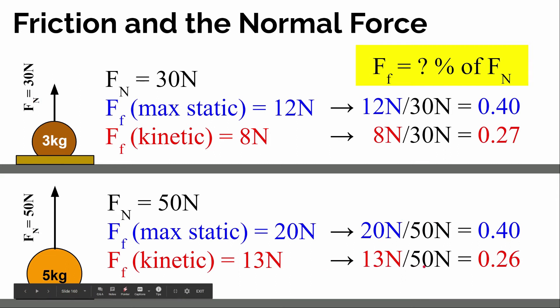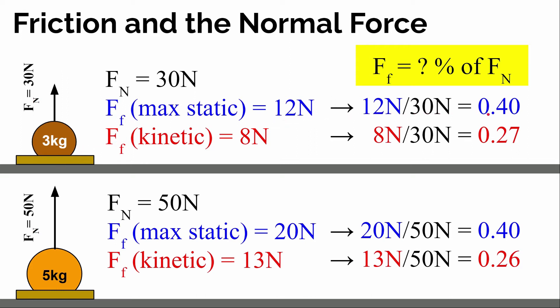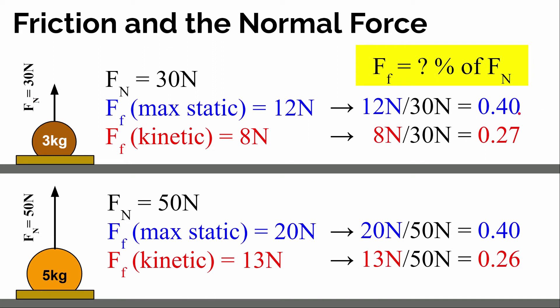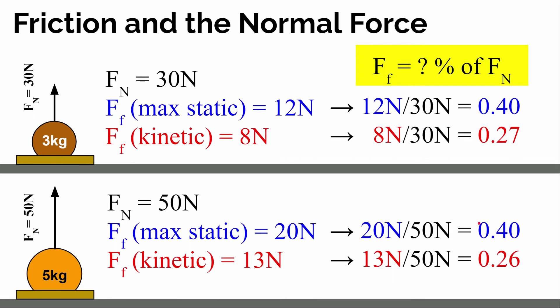It turns out that for plastic against this smooth table, the biggest static friction can be — no matter what the mass of the object is, no matter what the size of the normal force is — is about 40% of whatever the normal force is. And kinetic friction will be about a quarter of whatever the normal force is. We can use this to make a prediction: if the normal force is 100 newtons, we would expect the static frictional force to be up to 40 newtons and the kinetic friction force to be about 25 to 27 newtons.